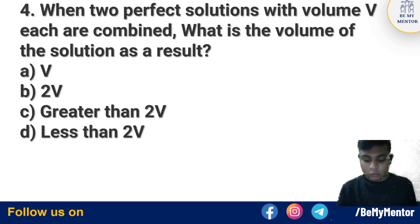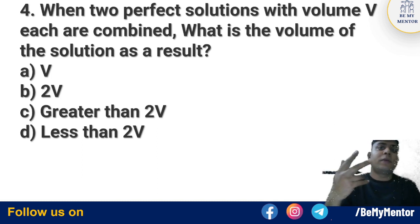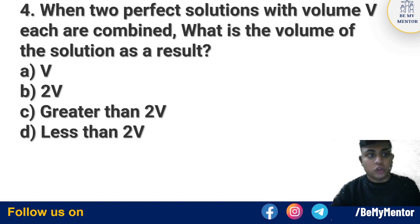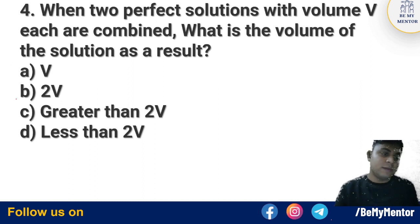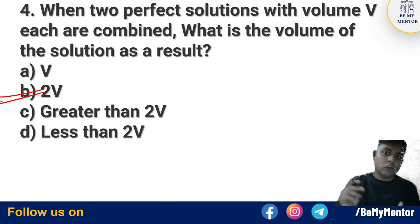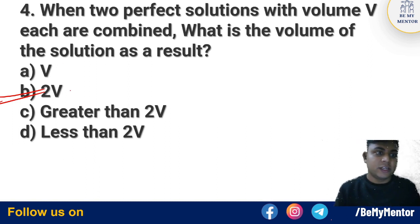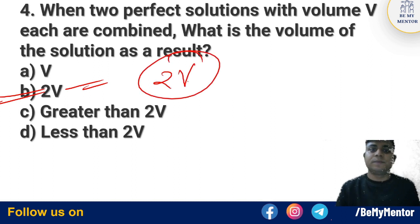Question number 4 says: When two perfect solutions with volume V each are combined, what is the volume of the solution? If there are two perfect solutions, it means they will not mix with a change in volume. There will be no difference in volume, so the total volume will be 2V — that is V plus V.